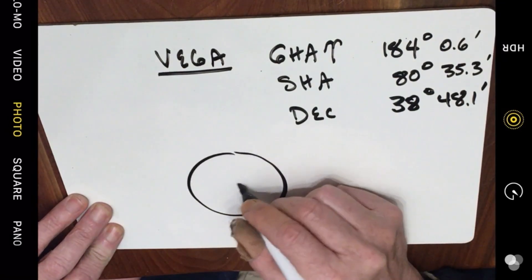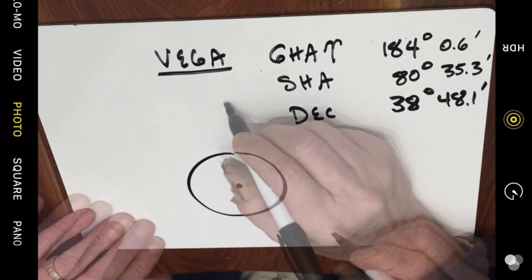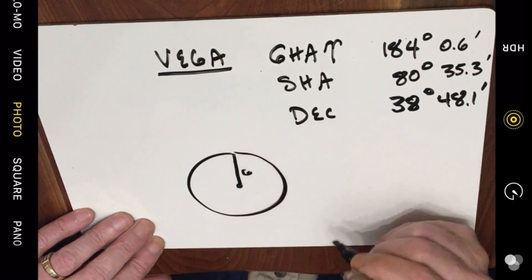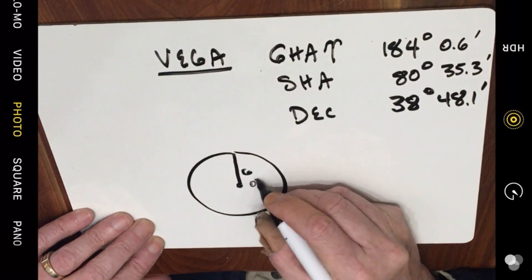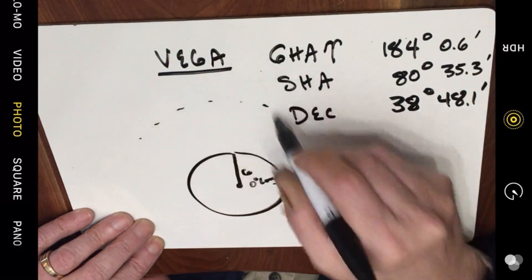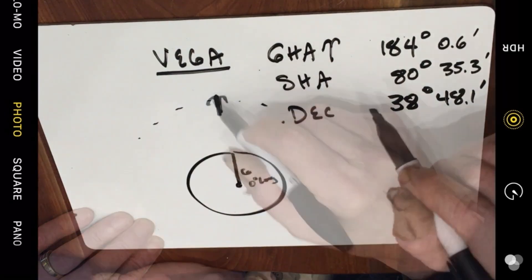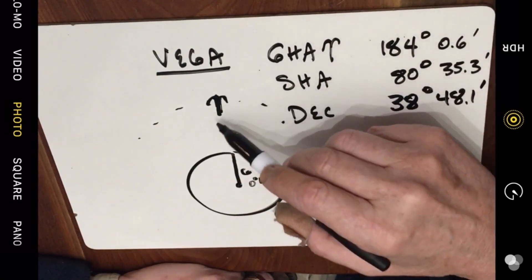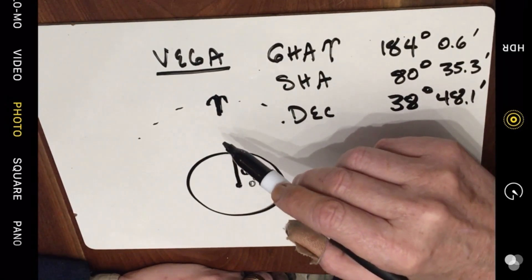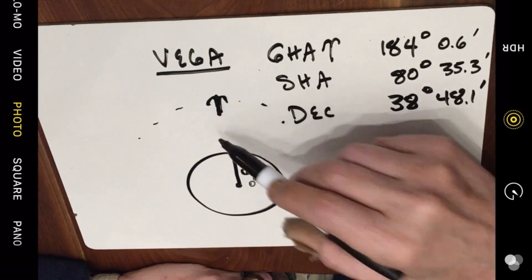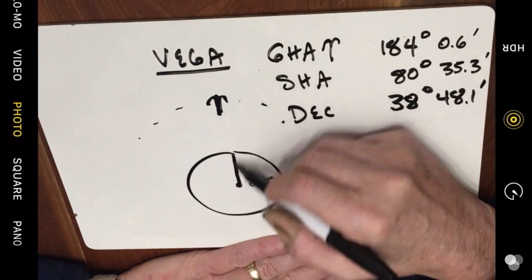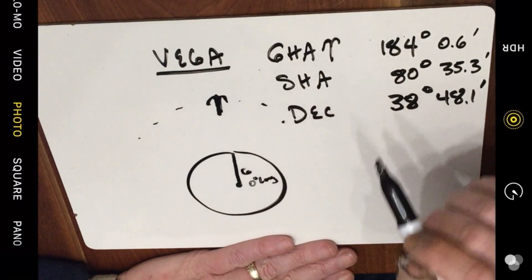If you look at the Earth from the viewpoint of the North Pole, we're going to have a couple of prime meridians. The first one is the prime meridian of Greenwich, which is zero degrees longitude. Out in the celestial sphere we're going to see Aries — that's the point on the celestial sphere that is directly over the equator at the March equinox, and that is the prime meridian of the celestial sphere. So let's look at a situation where Aries is directly over the prime meridian of Greenwich.